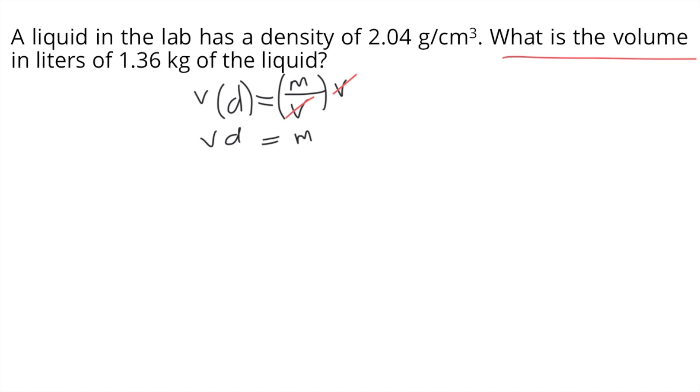Next, divide both sides of the equation by D. D cancels on the left side. So our formula for volume is M mass over D density. Since we have the formula for volume, we now need to substitute the values.